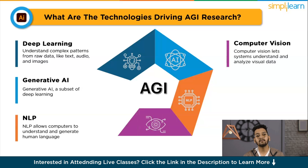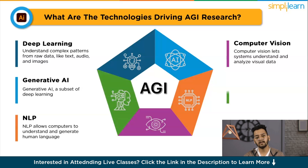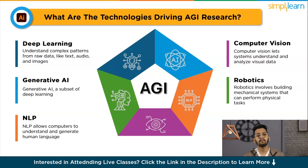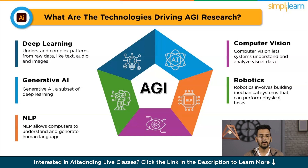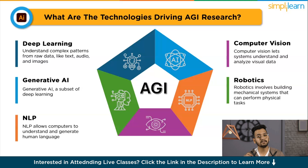The fourth technology is Computer Vision, which lets systems understand and analyze visual data. It is used in self-driving cars and for tasks like image recognition. Amazon Rekognition automates image analysis for various applications. The fifth is Robotics, which involves building mechanical systems that can perform physical tasks. In AGI, robotics brings machine intelligence into the physical world. AWS RoboMaker helps simulate and test robotic systems. For example, a robotic arm with AGI could learn to sense, grasp, and peel oranges like a human. These technologies contribute to the journey toward AGI, bringing us closer to creating intelligent machines with diverse abilities.